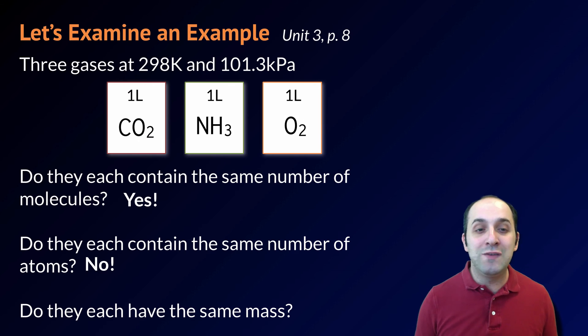They absolutely do not each contain the same number of atoms. Carbon dioxide is made out of three atoms, ammonia is made out of four atoms, and oxygen gas is made out of two atoms. So even though they have the same number of molecules, the fact that each molecule is made out of a different number of atoms means that they each contain different numbers of atoms in total.